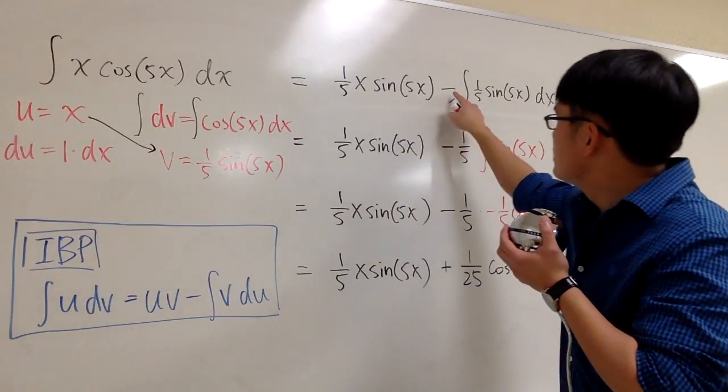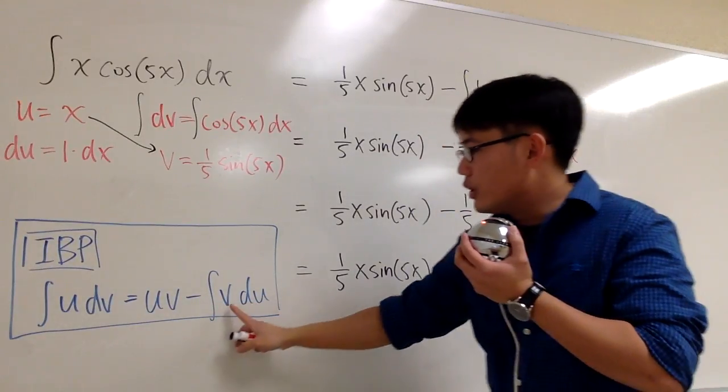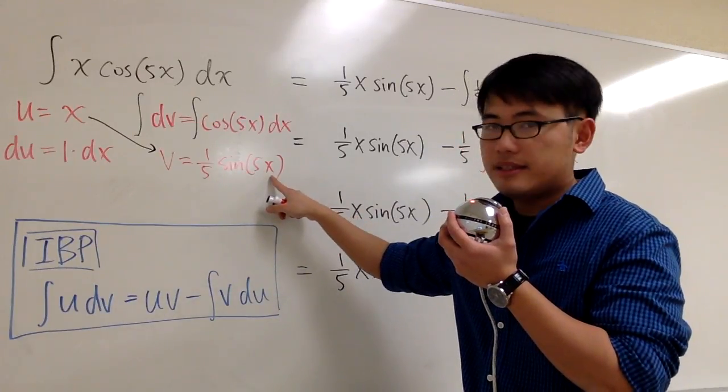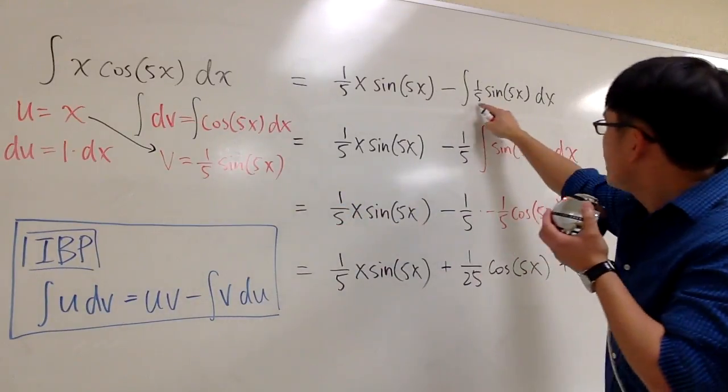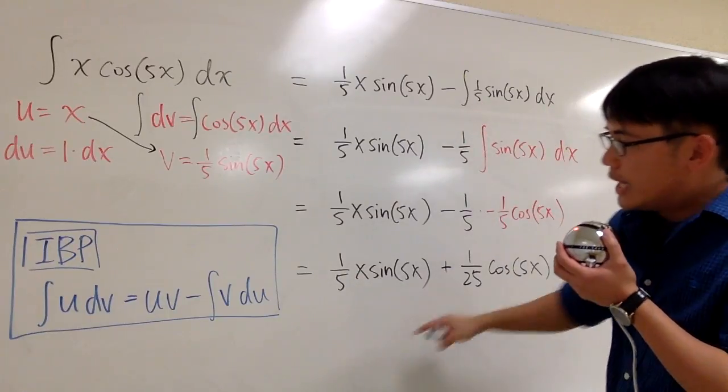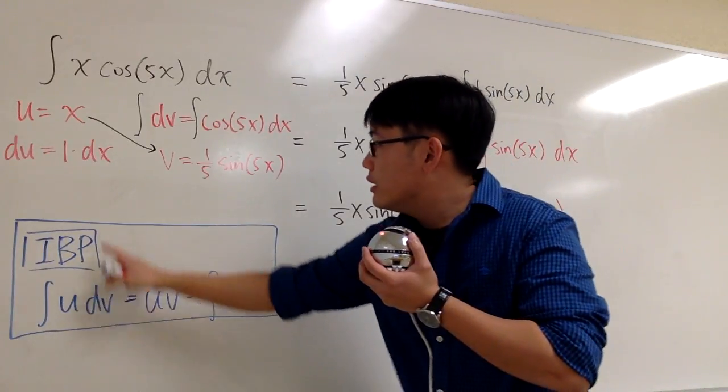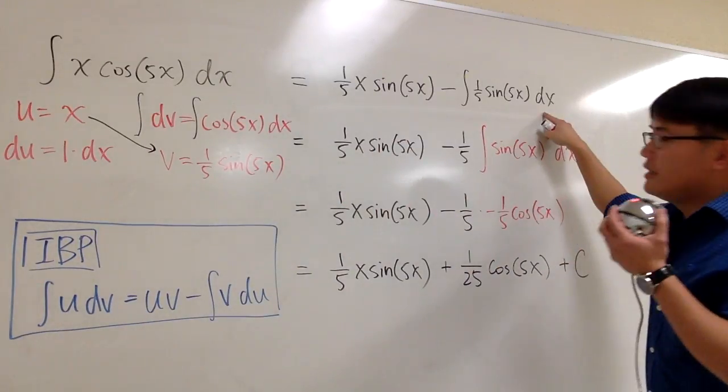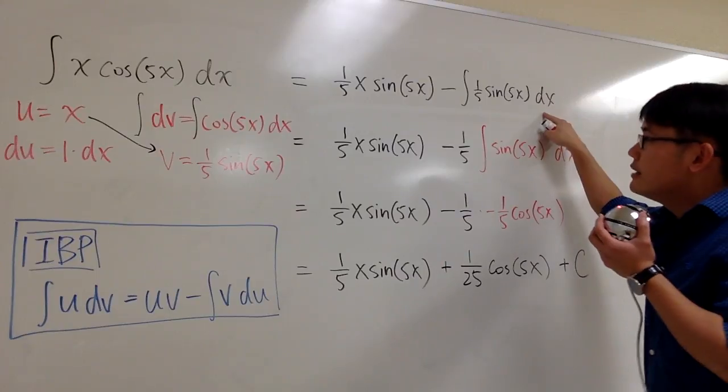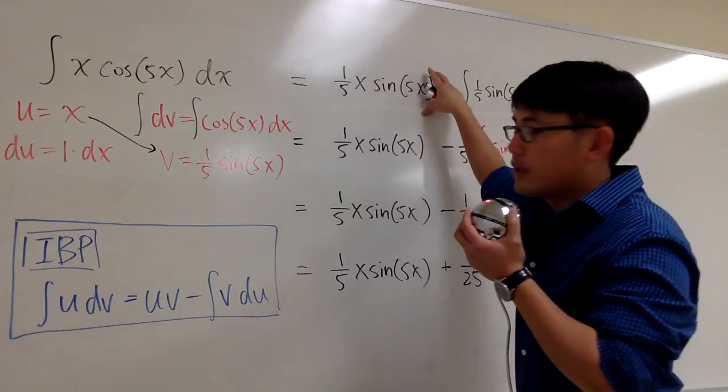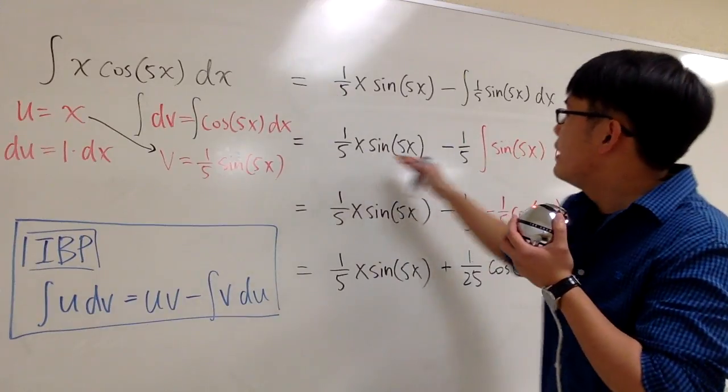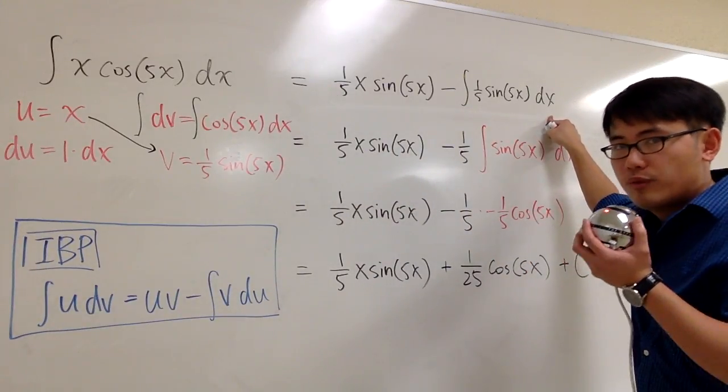And then, we have to subtract the integral. Subtract the integral. V is 1 fifth sine of 5x. So, I put this down right here. du is dx, right? du is the same as dx. So, we have that dx right here. And, as you can see, the first part, it's the part of the answer already. There's no more integrations. But then, this is still another integral that we have to work out.